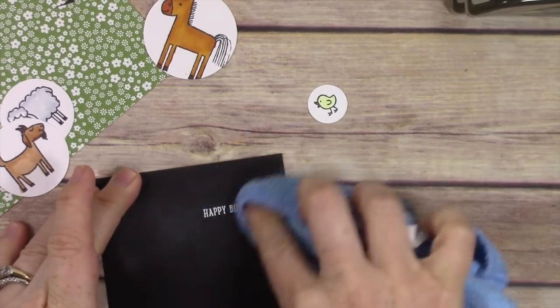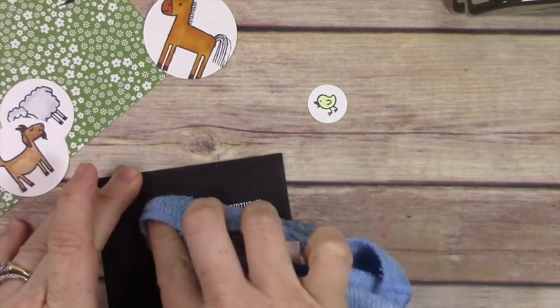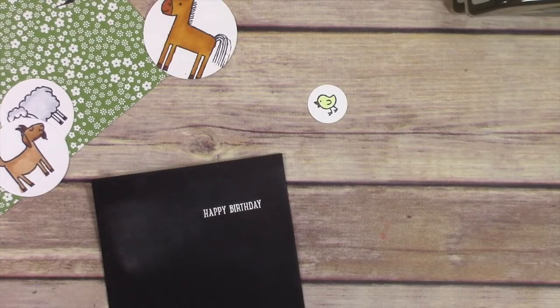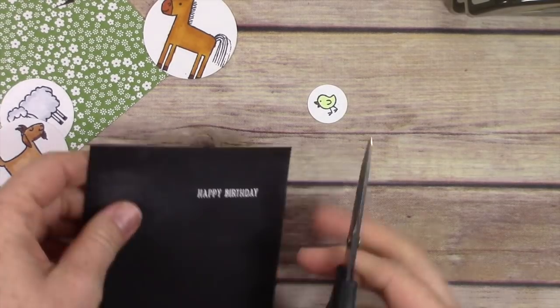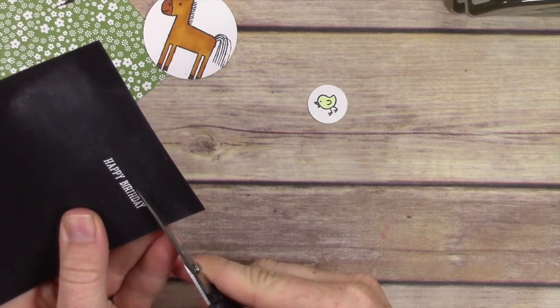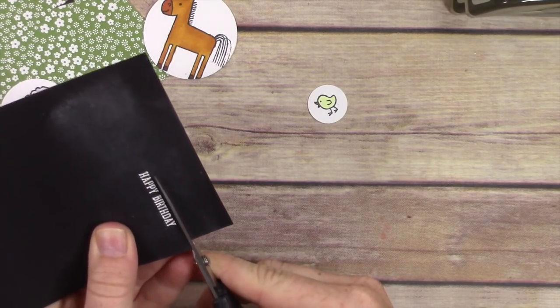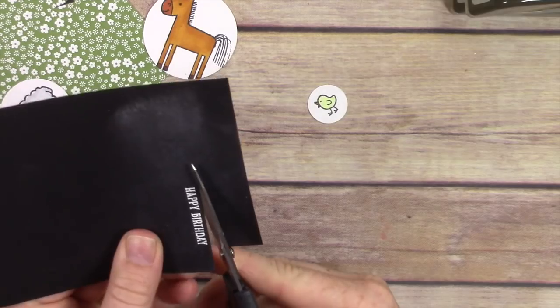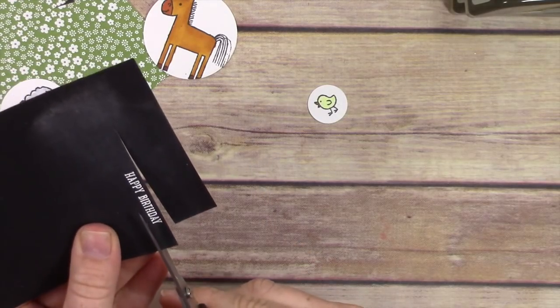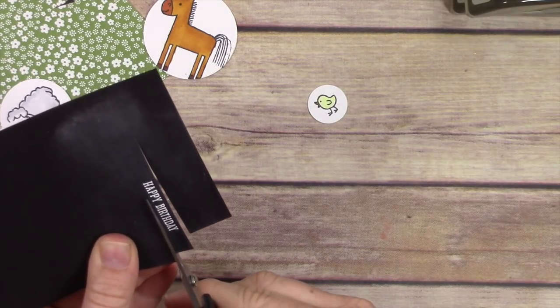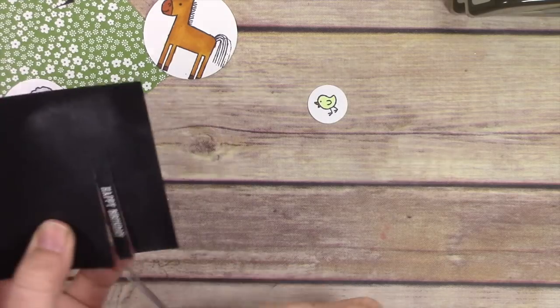Now I'm just using a little terry cloth towel, a microfiber cloth actually, to rub away that powder so it's not all powdery. I'm gonna hand cut out the sentiment. This Happy Birthday sentiment is from the same stamp set—I only used one stamp set for this card.